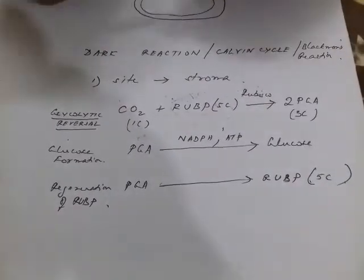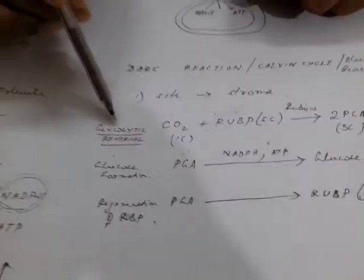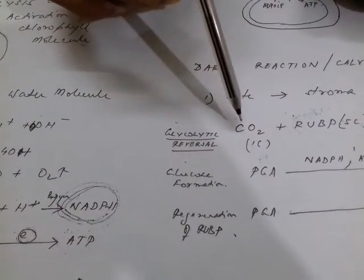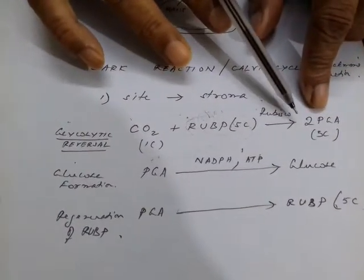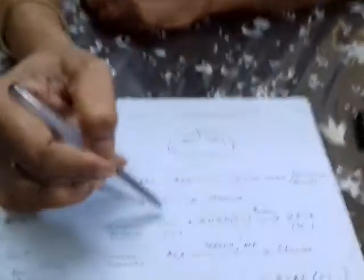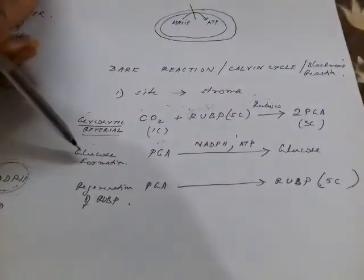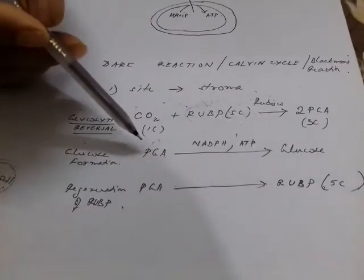So there are three steps. The first is called glycolytic reversal — carbon dioxide is converted to PGA. It is called glycolytic reversal because the reverse process takes place in glycolysis during respiration: in respiration PGA is converted to CO2 where ATP is formed, here CO2 is converted to PGA.